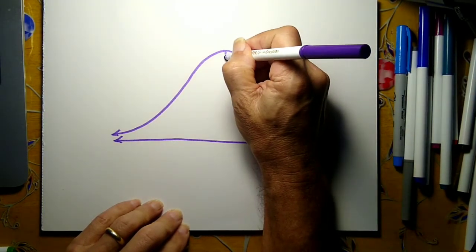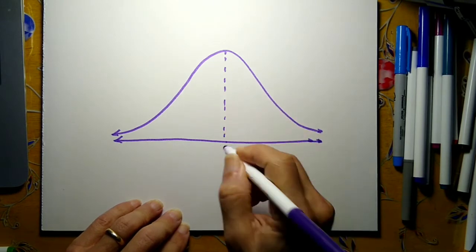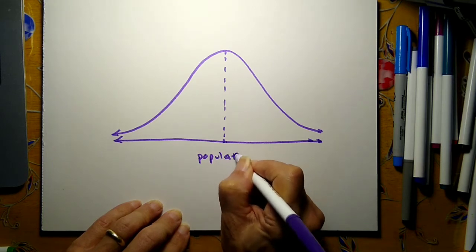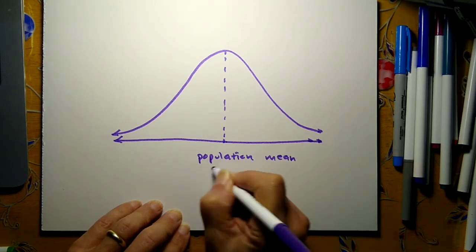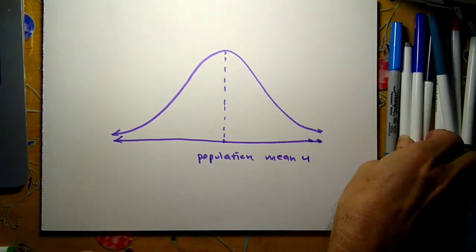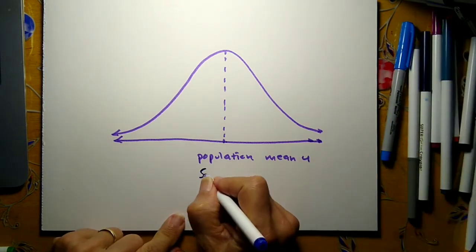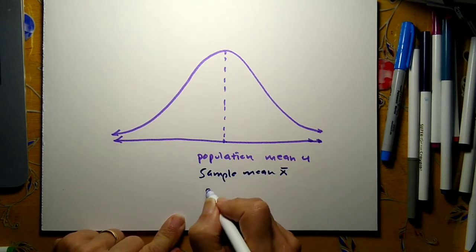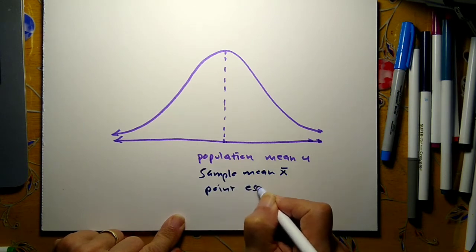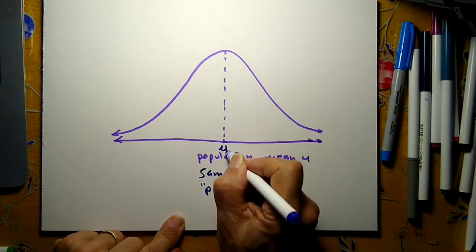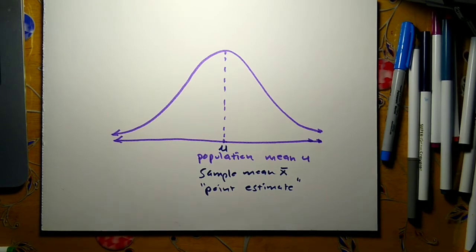The normal curve centers on the population mean mu. But we don't usually know the population mean, so we use the sample mean x-bar as a point estimate of the population mean. So technically this is the population mean, but in reality we don't have the population value, so we just use the sample mean.